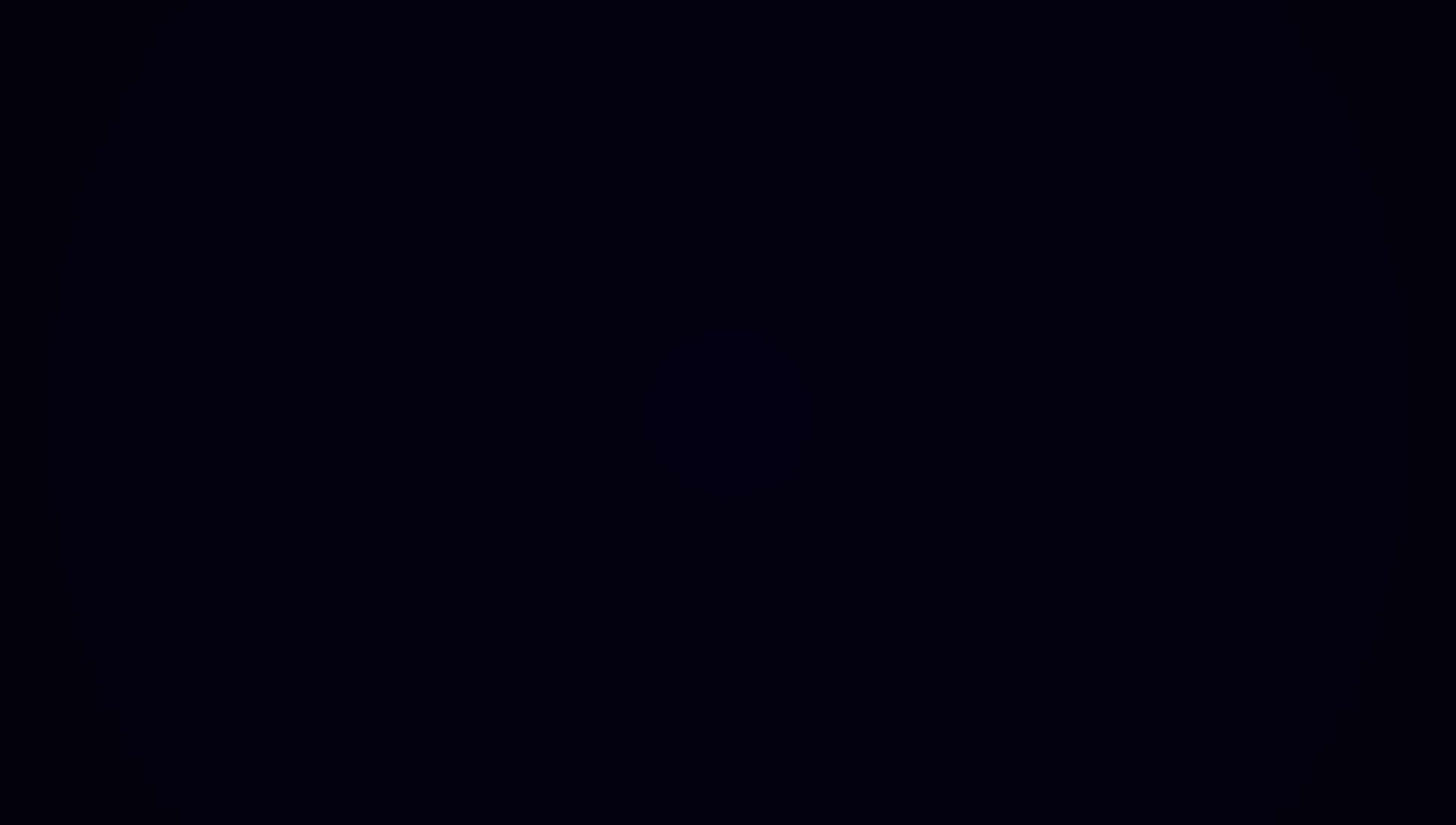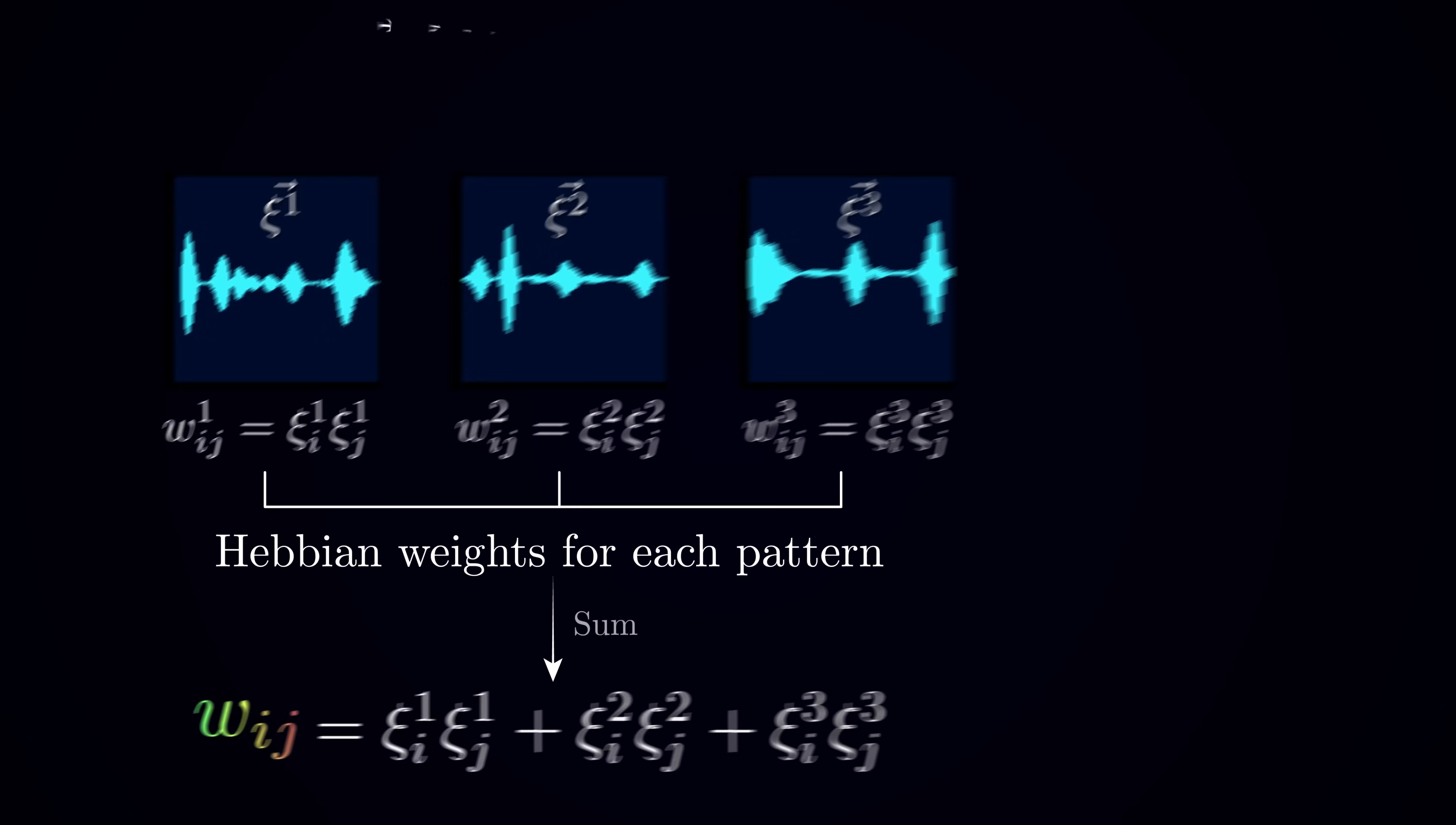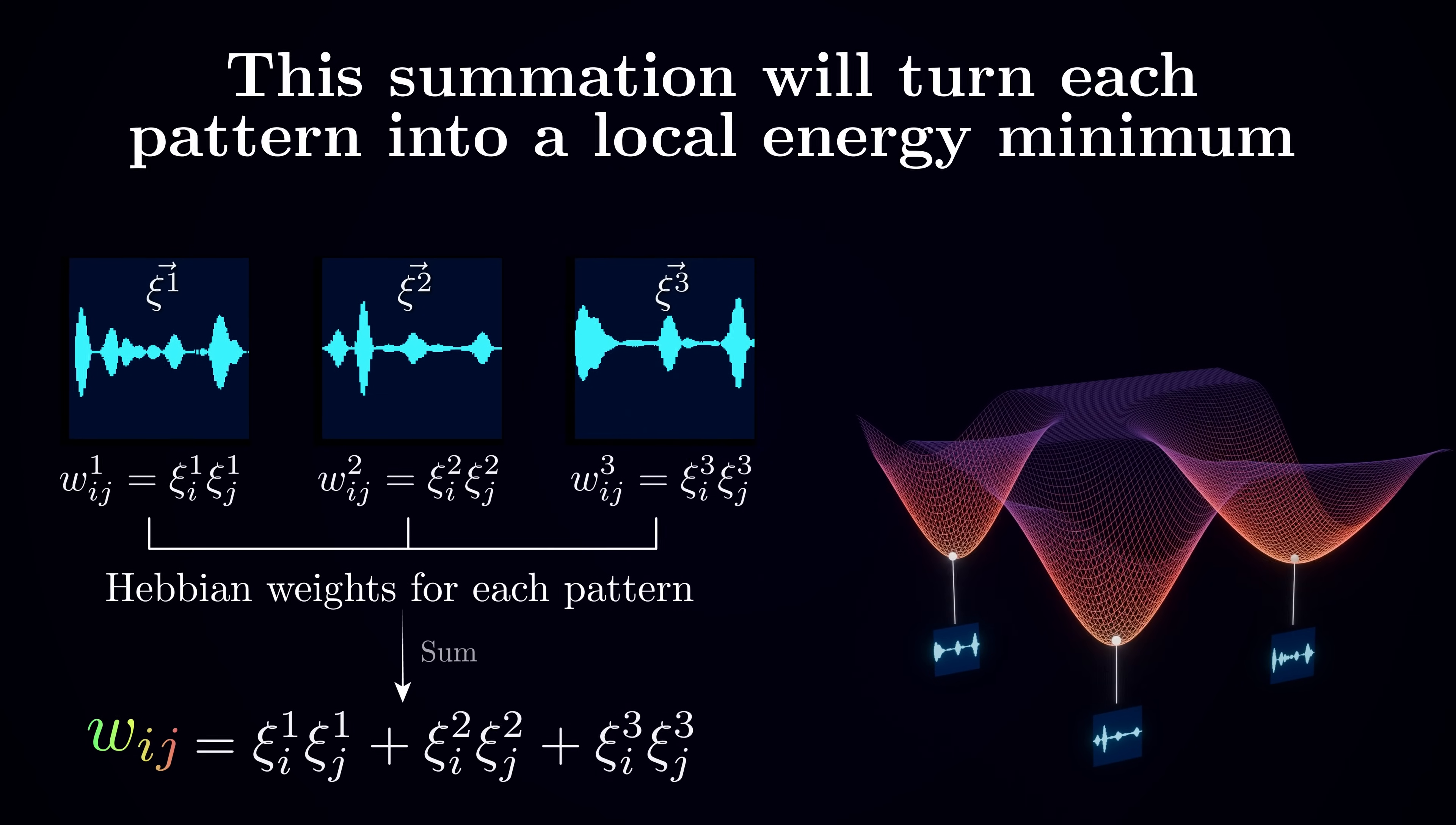Here is the key idea. We can simply sum the weights we would get for each pattern separately. So if we have three patterns, Xi1, Xi2 and Xi3, we can set the weights according to the following equation. What this will do is turn each of the patterns into a local minimum. It's pretty straightforward to show mathematically, and if you are interested, I encourage you to check out the references in the video description.